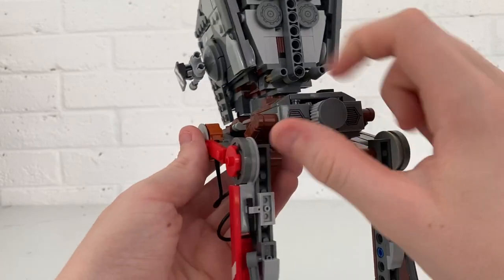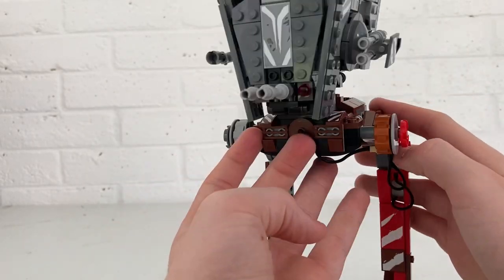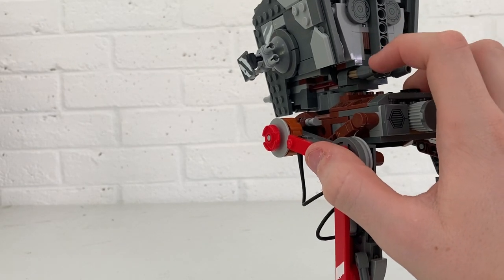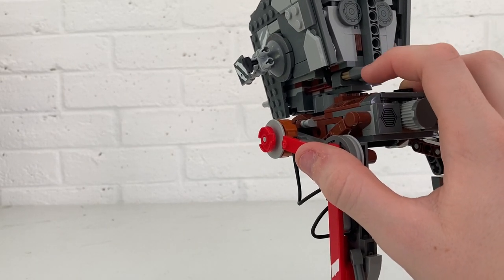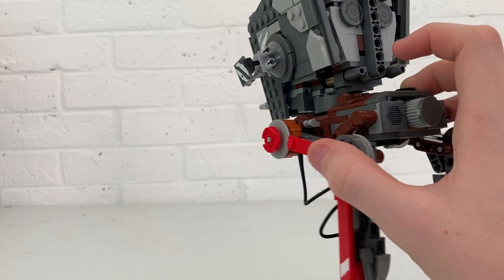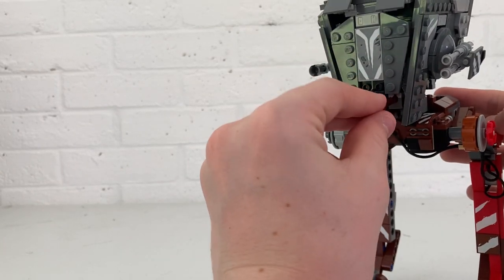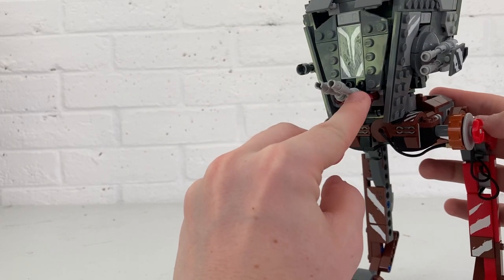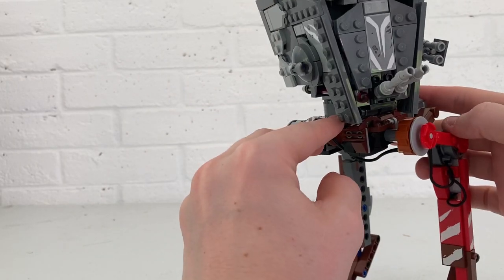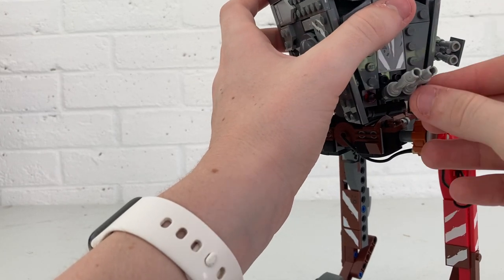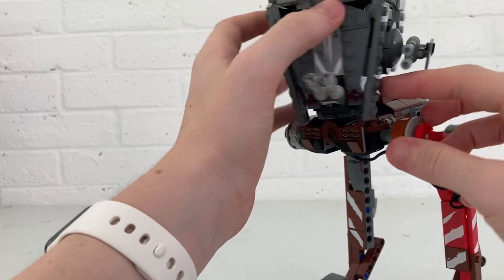We have these little things right here and that is of course for our spring-loaded shooters. You just push these down and they fire off like that. You can reload those super easy from the front, they're just right next to the main guns there. You just push them in, and they fire off like that.